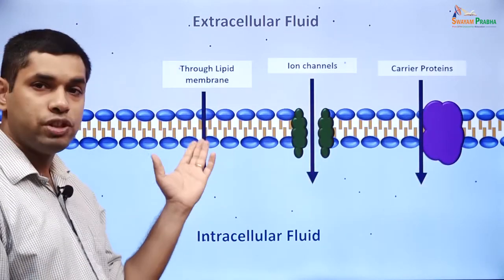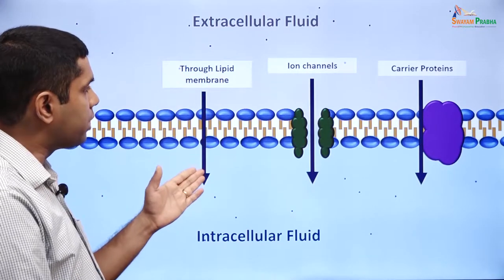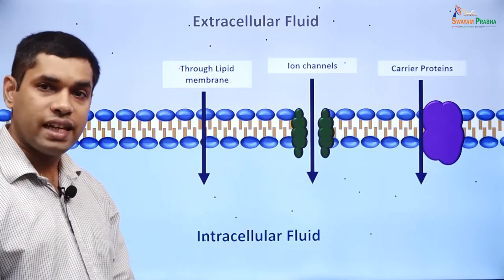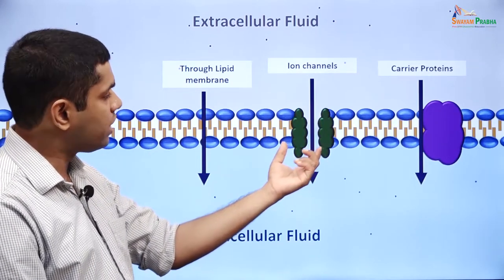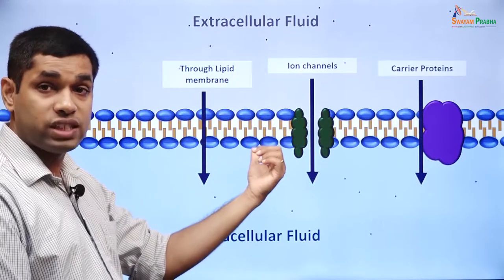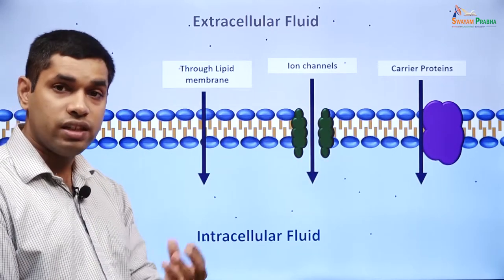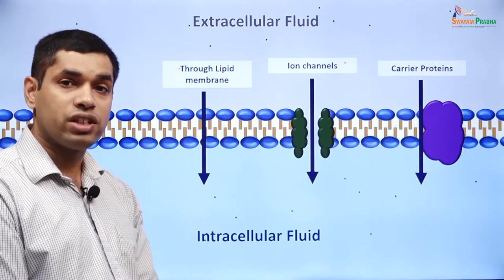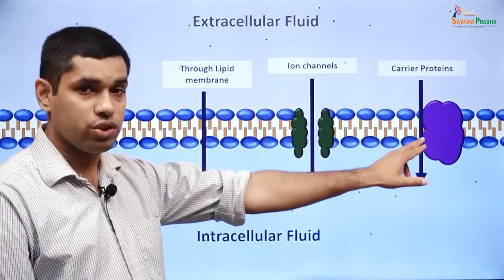The first is simple diffusion. If a substance is liposoluble, it can pass through the membrane by simple diffusion. The second is diffusion that happens through ion channels — ions which cannot pass through the cell membrane normally can pass through the pore present within the ion channel. The third broad type of membrane transport is transport that occurs through proteins called carrier proteins.